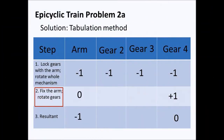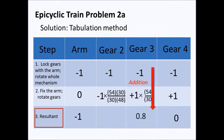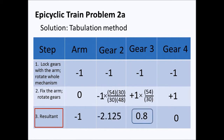We can now proceed with filling up the boxes for gears three and two, then add the numbers in the columns for gear three and gear two to find our resultant. And here are our answers.